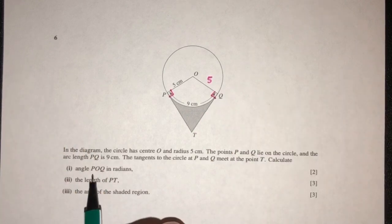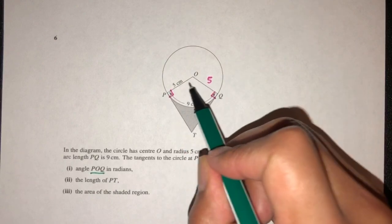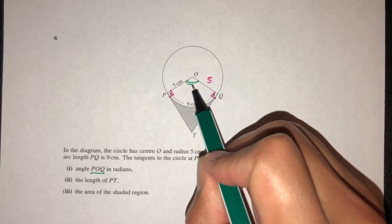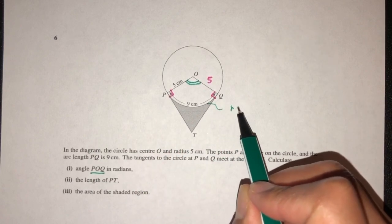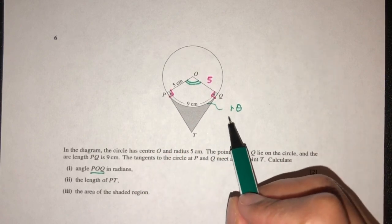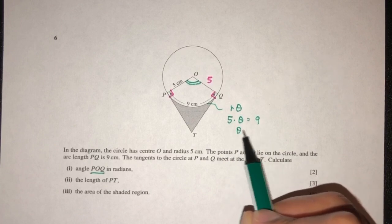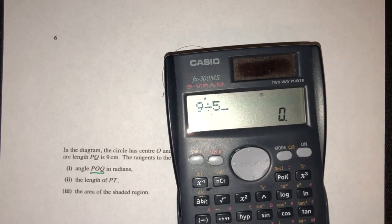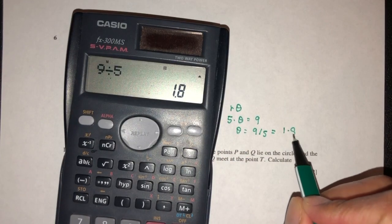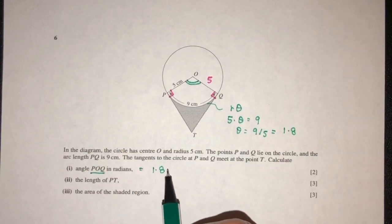Now we have to find the angle POQ in radians. We know the length of arc is given by the formula R times theta. R is 5, the radius, theta is the angle, equals 9. So theta will be 9 divided by 5, which gives 1.8 radians as the angle.